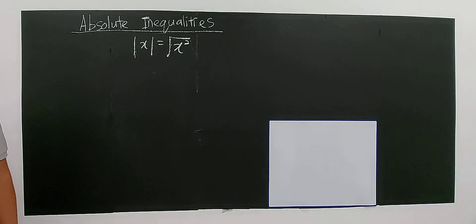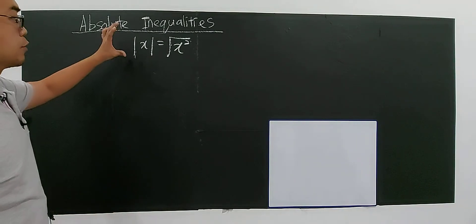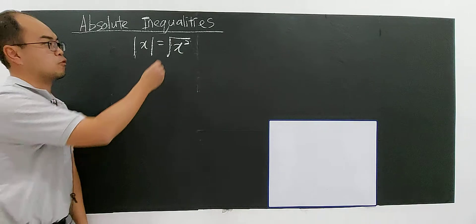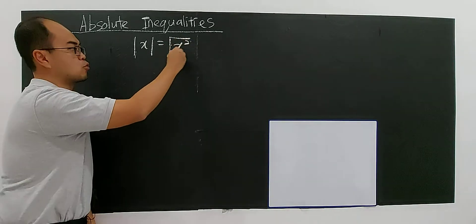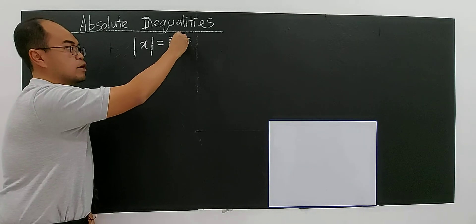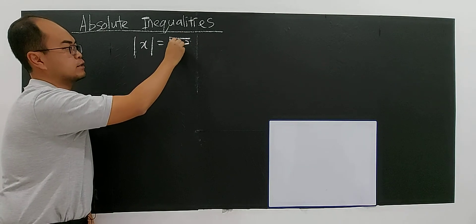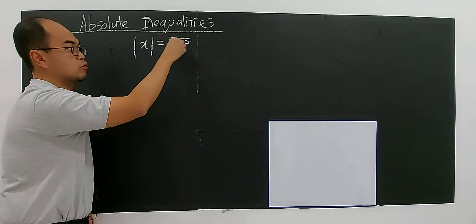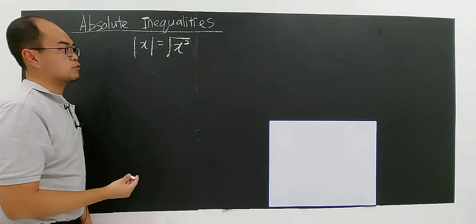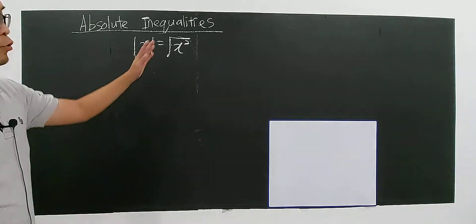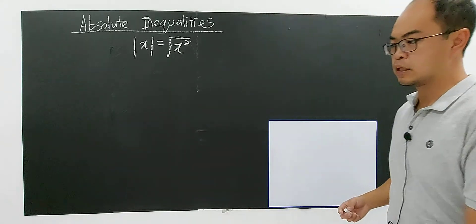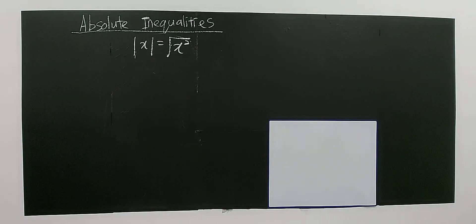This is another form in which you can write modulus x — as the square root of x squared. Because if you square a number, whether it is negative or positive, you will get a positive number. And if you take the square root, you will also get a positive number. I introduce this because I'm going to use it to derive the formula for absolute inequalities.